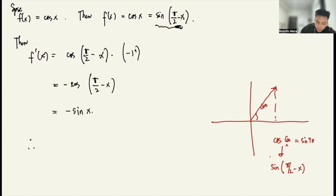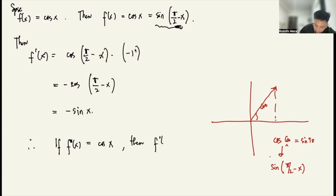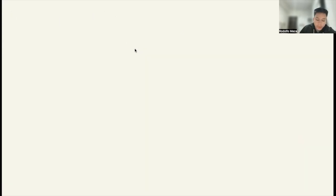Therefore, if f(x) = cosine x, then f'(x) = negative sine x. That's it.